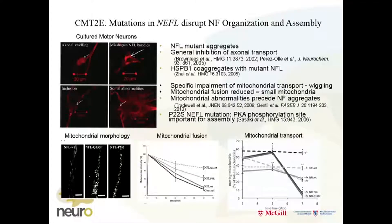We get neurofilament inclusions in bundles, and the soma starts looking a bit funny — it seems to kind of sprout. An interesting aspect is that heat shock protein 27 co-aggregates with mutant NFL. You'll find HSP27 will interact with neurofilament. Jean-Pierre talked about his model where PKA phosphorylation affects the site important for assembly.